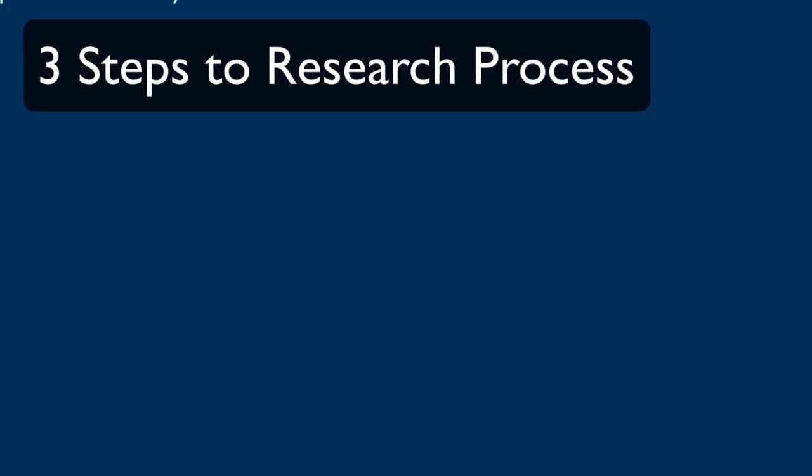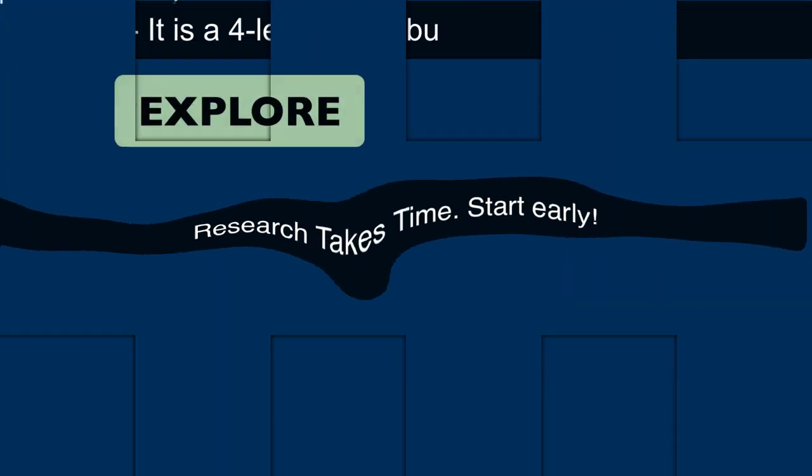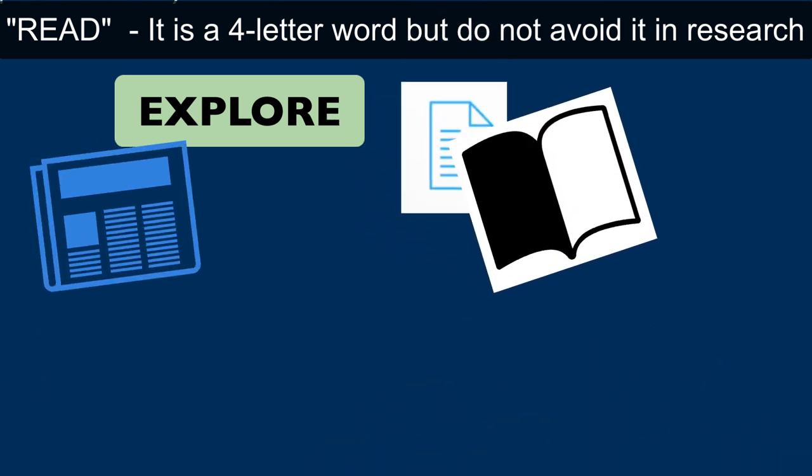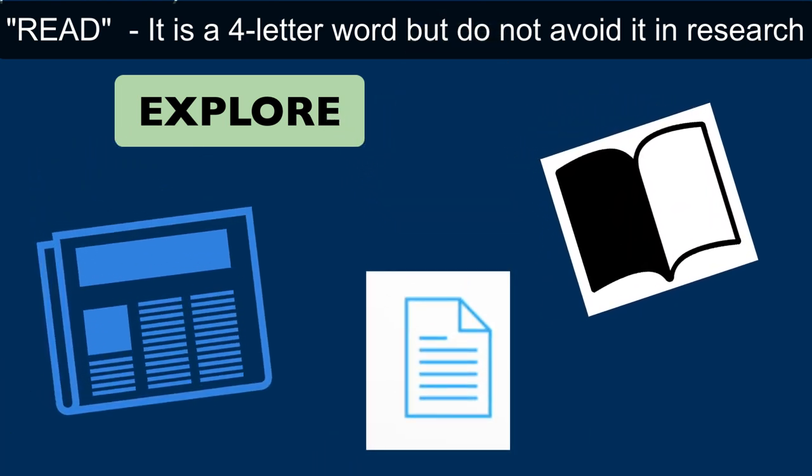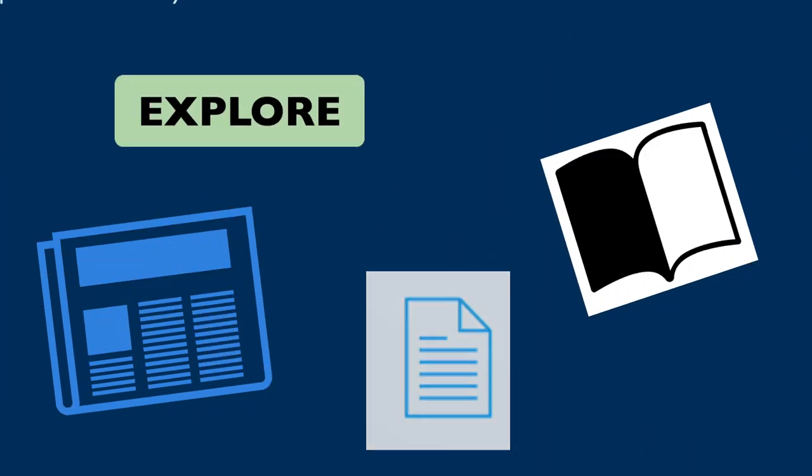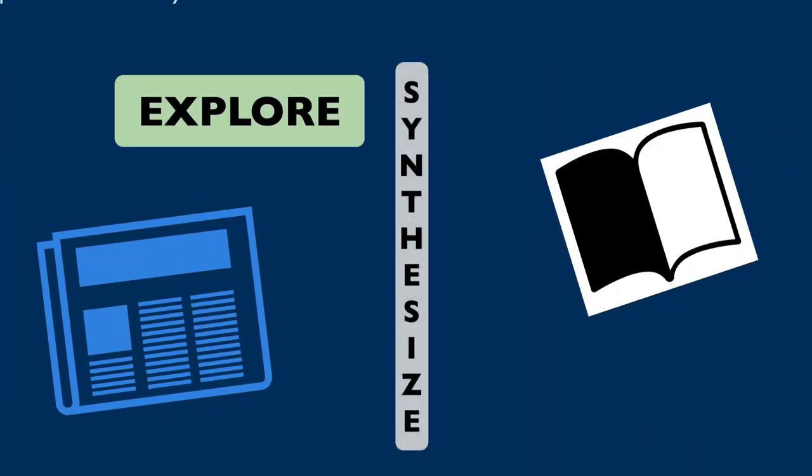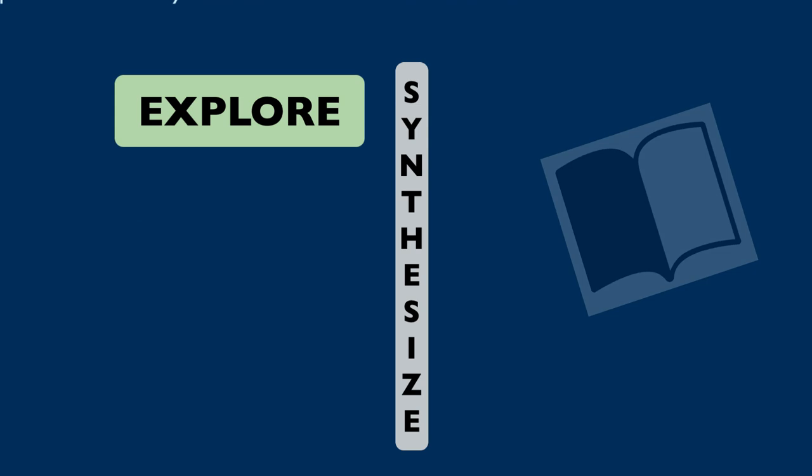Think of research as a journey in three steps and start the process early. In step one, you explore a topic by reading sections of books and other materials in order to acquire background knowledge. In step two, you synthesize these materials before focusing your topic.